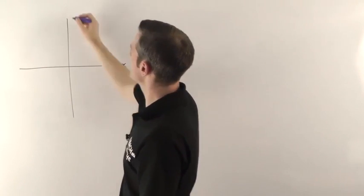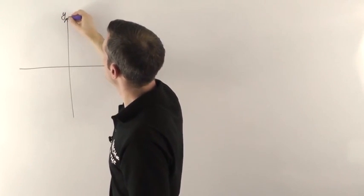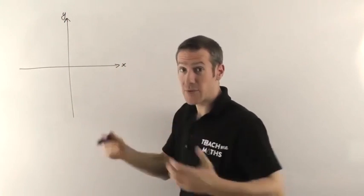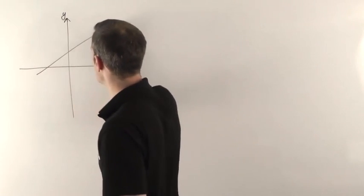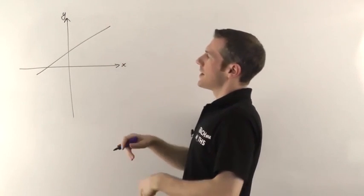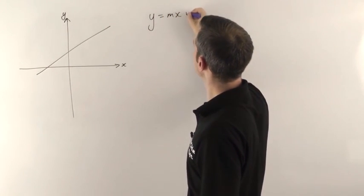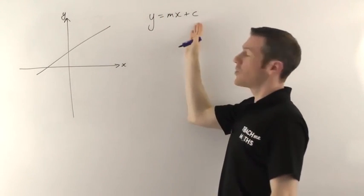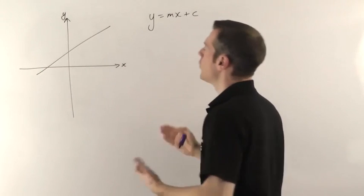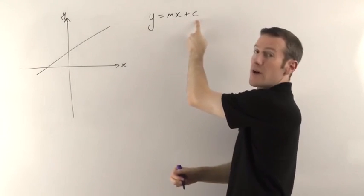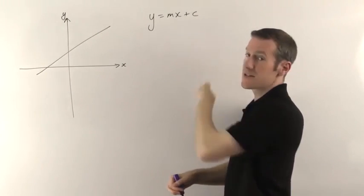If you imagine this is the x-axis, the y-axis, and you have some kind of straight line on here, then I explained in that video that for y equals mx plus c, if you want to work out what the equation is, all you need is the gradient and the y-intercept. m is the gradient, c is the y-intercept.